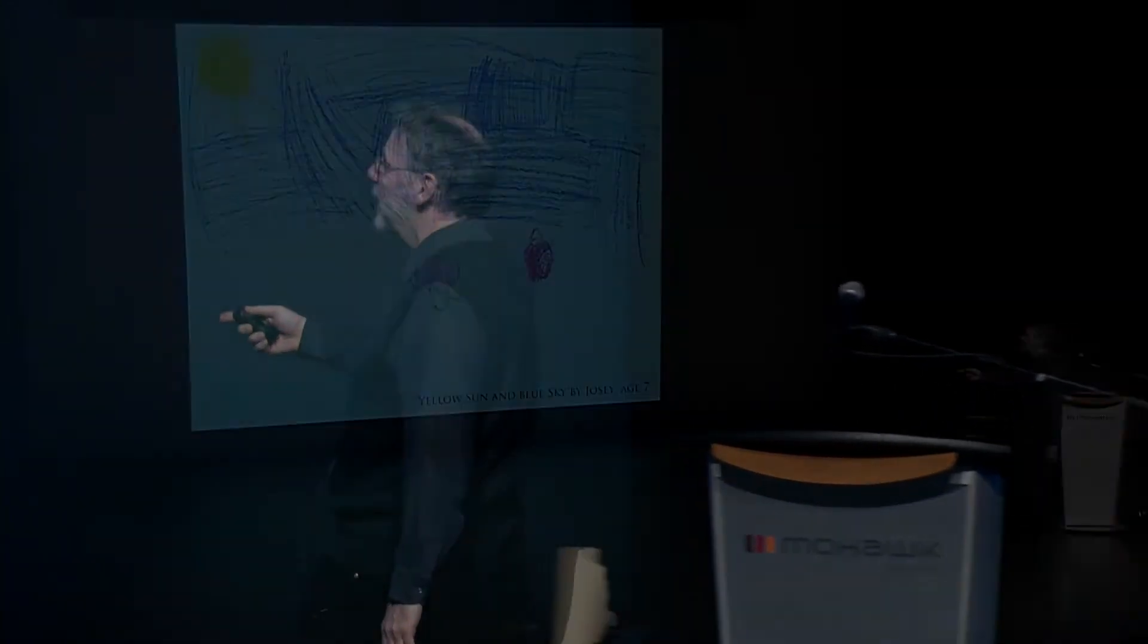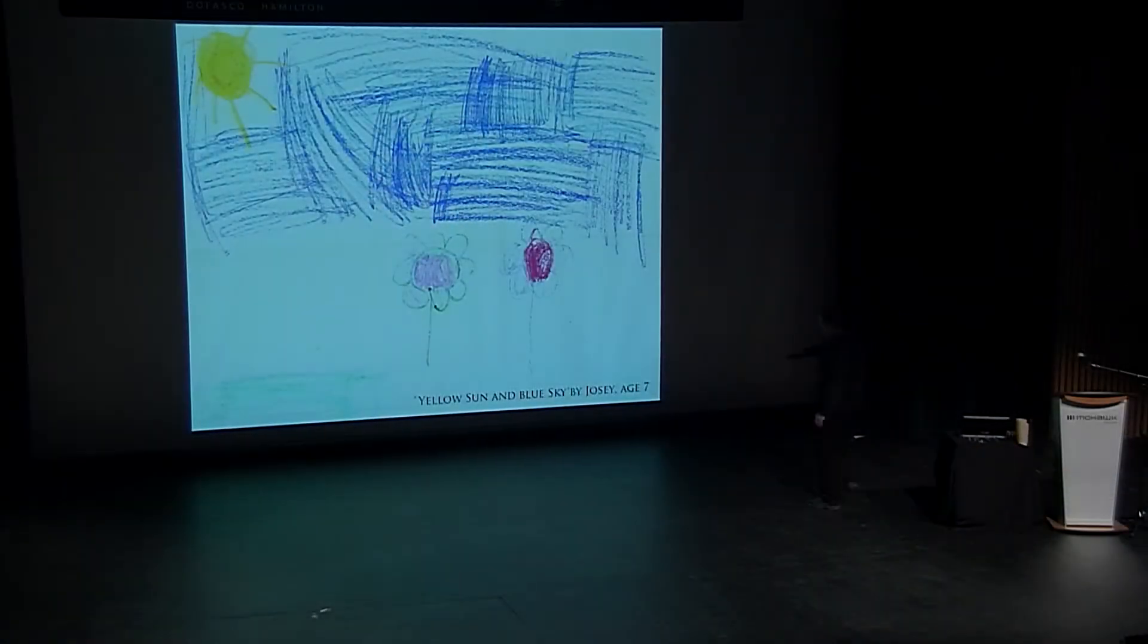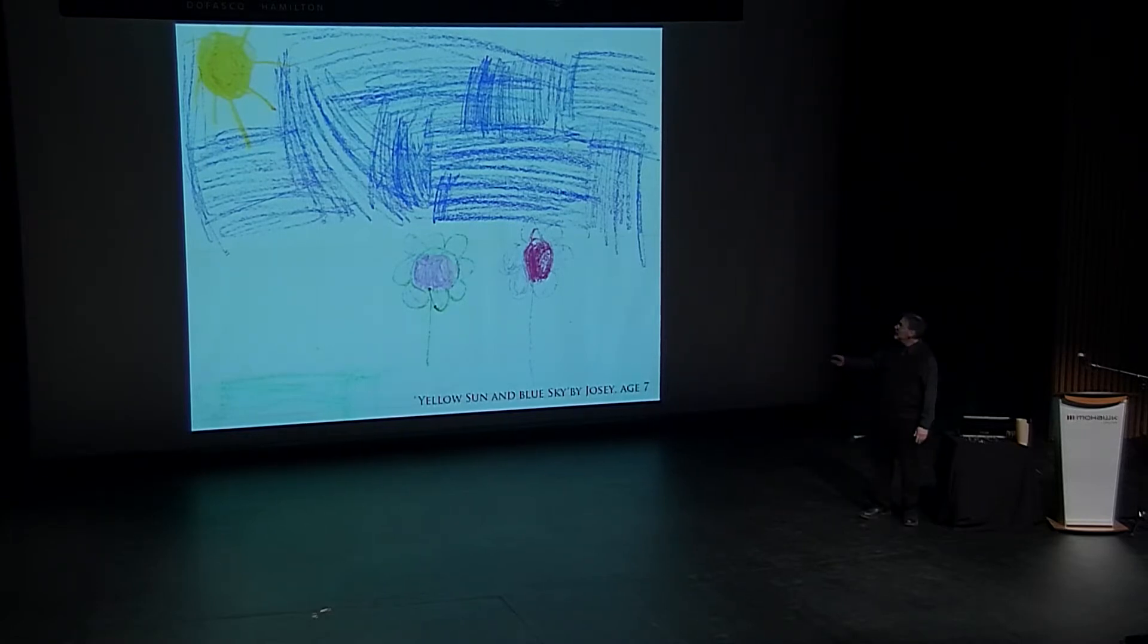Everybody knows the sun is yellow. My young friend, all of seven years old, drew this picture for me. Even she knows that the sun is yellow up in a blue sky.